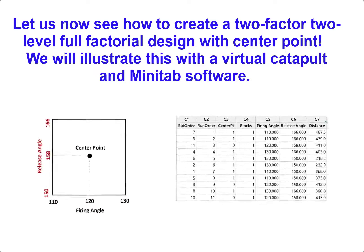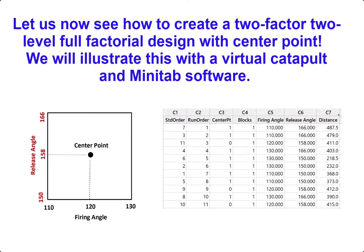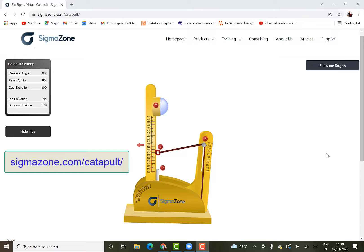Let us now see how to create a two-factor two-level full factorial design with center point. We will illustrate this with a virtual catapult and Minitab software. Sigma zone has made a very nice virtual catapult. This has got five different possible settings: the release angle, firing angle, cup elevation,